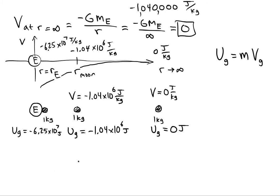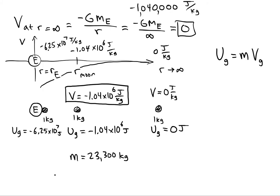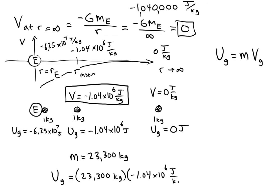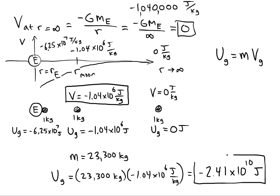Let the mass in the field be 23,300 kg. We already know the gravitational potential at the Moon's location, so we use Ug = mV: 23,300 kg times negative 1.04×10⁶ J/kg. The result is negative 2.41×10¹⁰ joules — quite a large number.